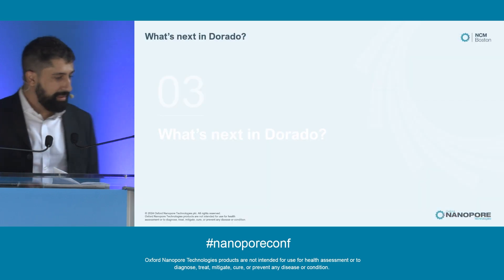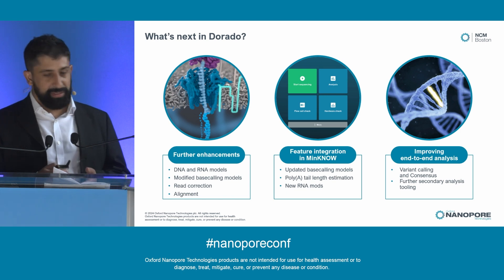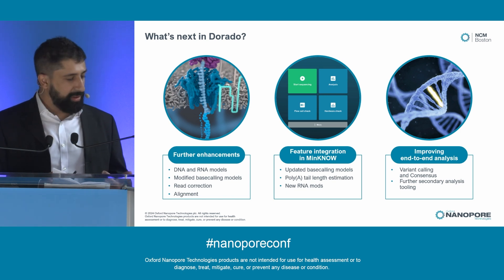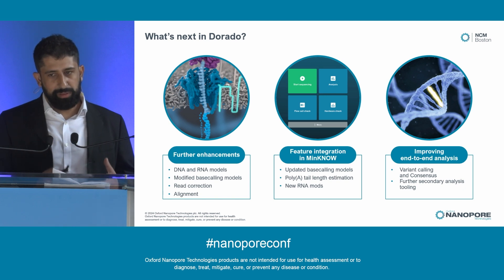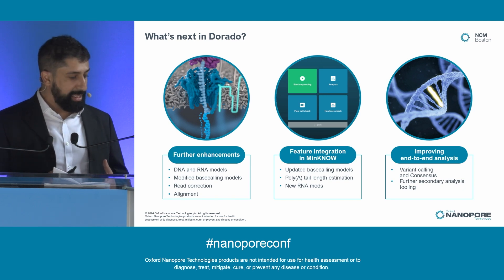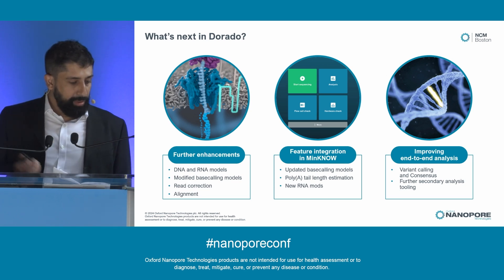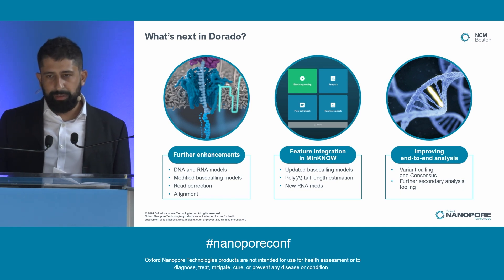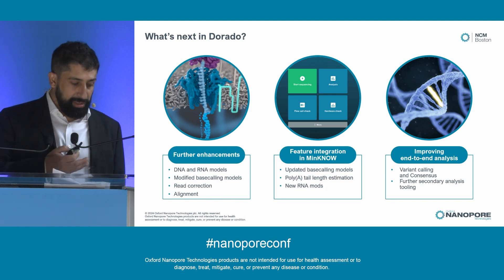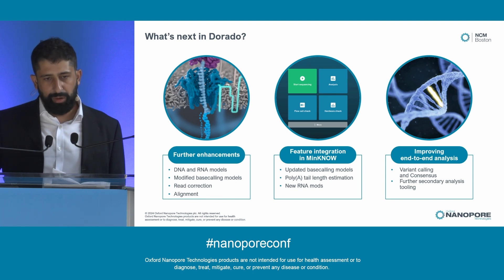What's next in Dorado? Enhancements are coming in three main areas. First, further speed improvements: faster DNA models, faster RNA models, faster modified base calling — we're working on novel deep learning architectures to improve modified base calling speed. Read correction and alignment are also going to get faster. Second, feature integration in MinKNOW — things reach MinKNOW a few weeks or months after they reach standalone Dorado, so new base calling models, poly-A tail length estimation, and new RNA mod models are all going to be reaching MinKNOW in a few weeks.